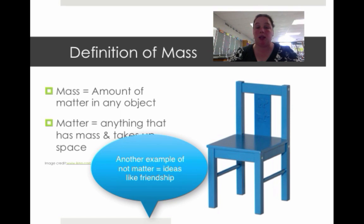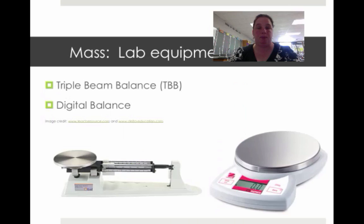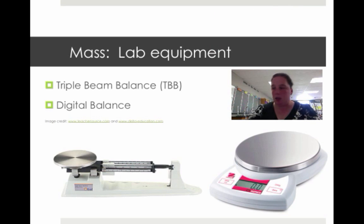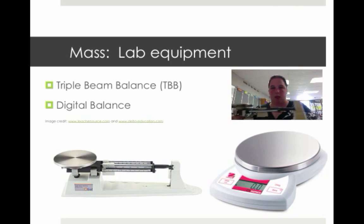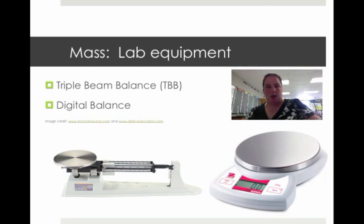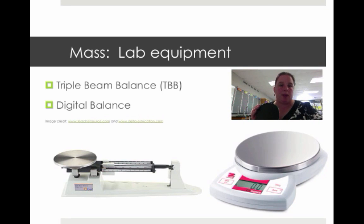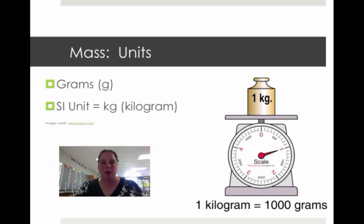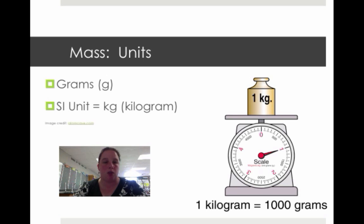Now what isn't matter? Something like a dream. The lab equipment you're going to be using — this is your triple beam balance, and then this is also one of our digital balances that you're going to be using. Now the units for mass that you're going to use are grams — those are the ones that our two balances use.